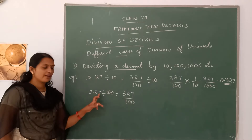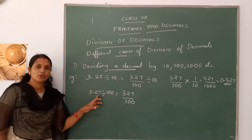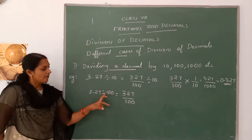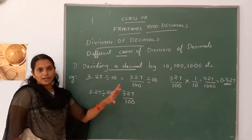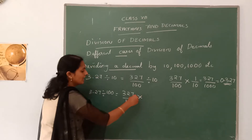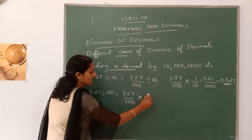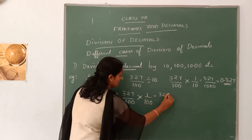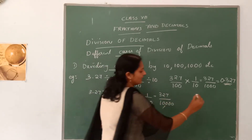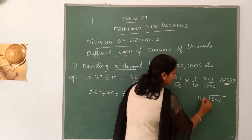Next example: 3.27 divided by 100. The fractional form of 3.27 is 327 divided by 100. When we divide a fractional number by a whole number, we find the reciprocal of the divisor and multiply. So 327/100 multiplied by the reciprocal of 100, which is 1/100, equals 327 divided by 10,000.